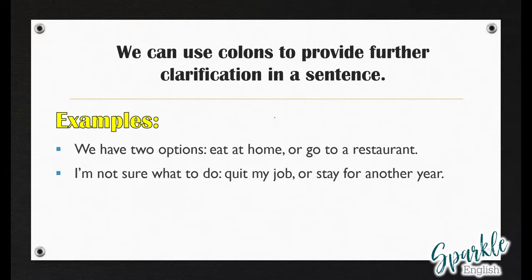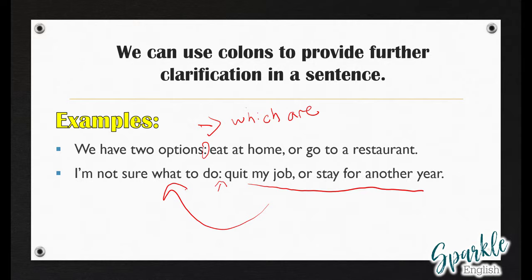We can also use colons to provide further clarification in a sentence. For example: 'We have two options: eat at home or go to a restaurant.' We use the colon here because we first stated there are two options, and then the colon — like an arrow — points to what those options are. Another example: 'I'm not sure what to do: quit my job or stay for another year.' If you just put a period after 'do,' it would separate two statements that should be connected, because 'quit my job or stay for another year' is directly connected to the independent clause 'I'm not sure what to do.'